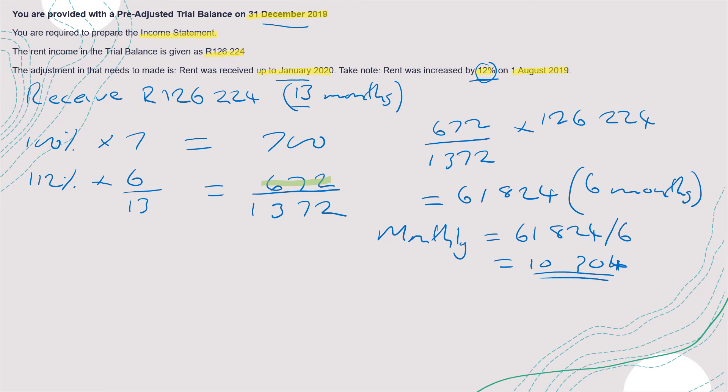So that's the adjustment that we need to remember. It was just one month - the month that was received in advance. If we receive for 14 months, we would multiply this by two, because we received rent in advance for two months. Your adjustment will be as follows.